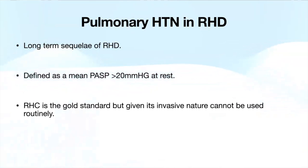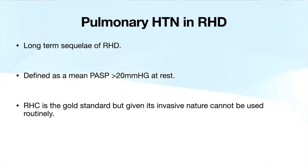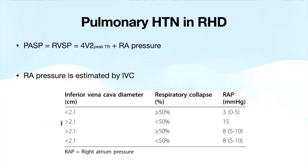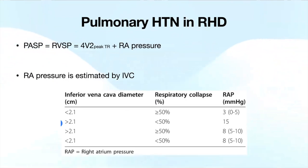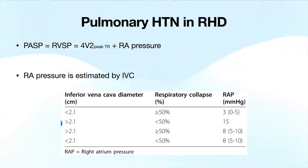Pulmonary hypertension in rheumatic heart disease is a long-term sequelae, defined as mean pulmonary artery systolic pressure more than 20. While the gold standard is invasive right heart catheterization, echo is used for serial follow-up. The estimation equation is four times the peak TR velocity squared, plus the RA pressure. RA pressure is estimated by IVC: if it collapses more than 50% and is not dilated, RA pressure is 3; if dilated and doesn't collapse, it's 15; if the two measurements don't agree, RA pressure is 8.